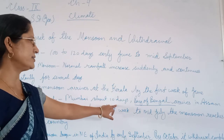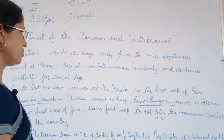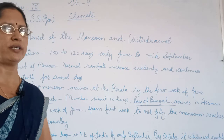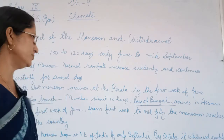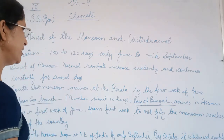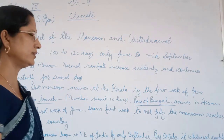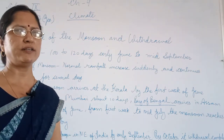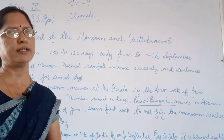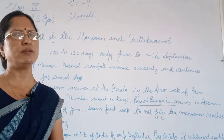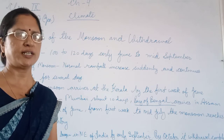The Bay of Bengal branch spreads to the rest of the eastern parts of the country. Slowly, from the first week of July to mid-July, the monsoonal winds spread across all of India.